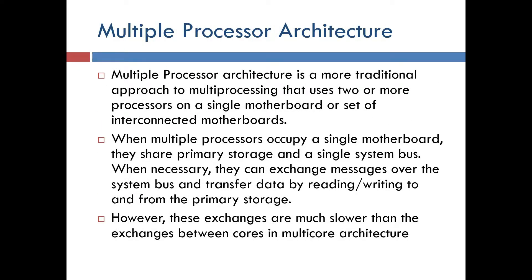Multiple processor architecture is a more traditional approach to multiple processing that uses two or more processors on a single motherboard or set of interconnected motherboards. When multiple processors occupy a single motherboard, they share primary storage and a single system bus. When necessary, they can exchange messages over the system bus and transfer data by reading or writing to and from primary storage. However, these exchanges are much slower than the exchanges between cores in multi-core architecture.